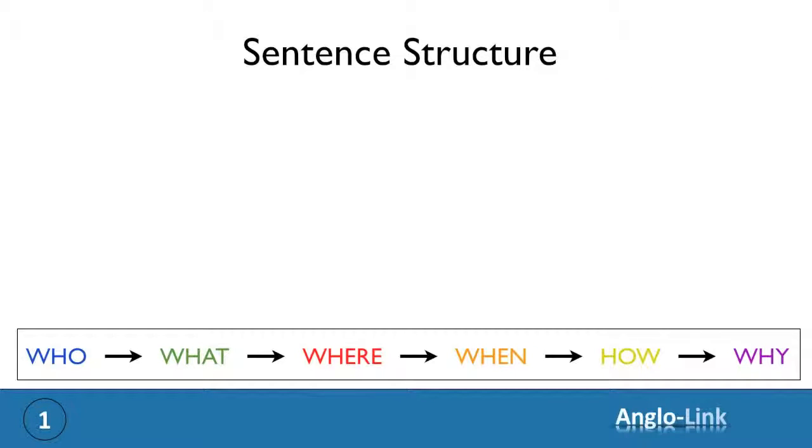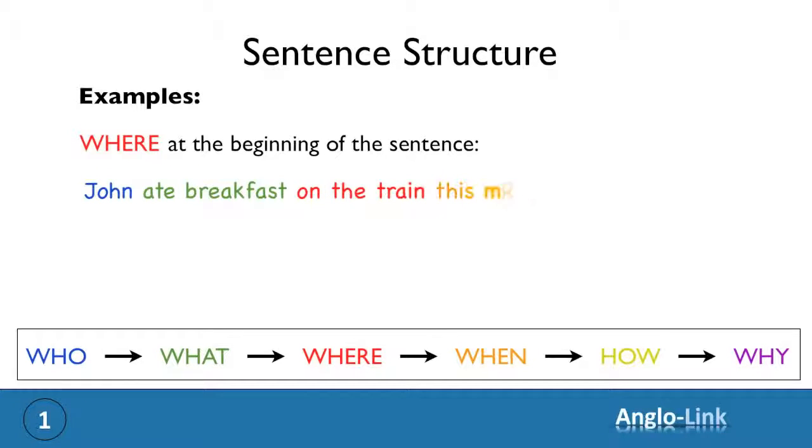Let's look at some examples. Let's start with putting where at the beginning of a sentence. If we look at one of our earlier examples, for example, John ate breakfast on the train this morning, and put the element of where, that is on the train, at the start of this sentence, you will notice that it doesn't sound very natural. On the train, John ate breakfast this morning. Because there is no reason to emphasize this element. It's unnatural.